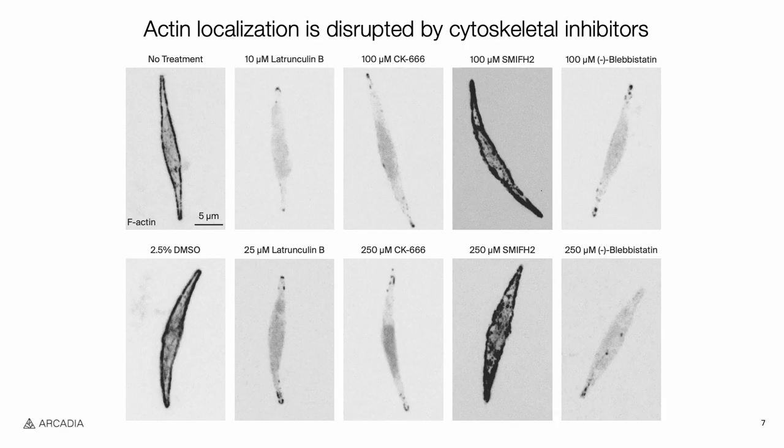To confirm that the inhibitors were actually disrupting the cytoskeleton, we treated cells with the drugs and stained with phalloidin. Consistent with the protoplast formation, latrunculin B, CK666, and blebbistatin substantially disrupted the localization. Surprisingly, treatment with the formin inhibitor SMIFH2 actually increased actin staining.